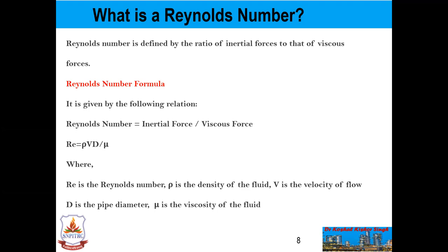Numerically, these are acceptable values, although laminar and turbulent flows are classified according to a range. Laminar flow falls below a Reynolds number of 1100, and turbulent flow falls in a range greater than 2200. Laminar flow is the type of flow in which the fluid travels smoothly in regular paths. Conversely, turbulent flow is not smooth and follows an irregular path with lots of mixing.